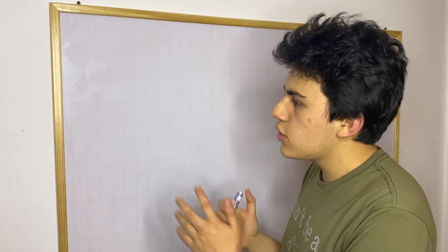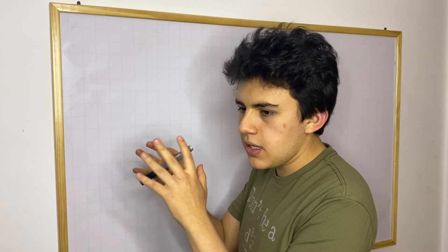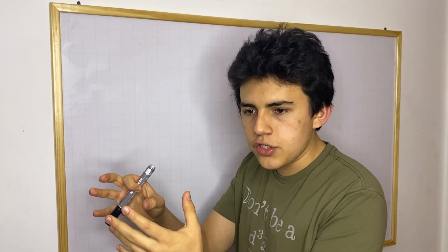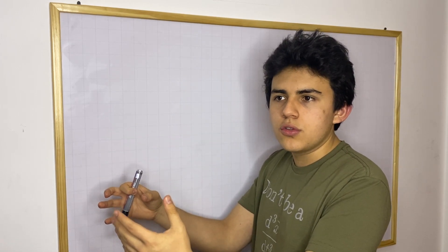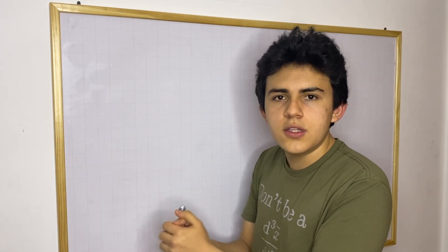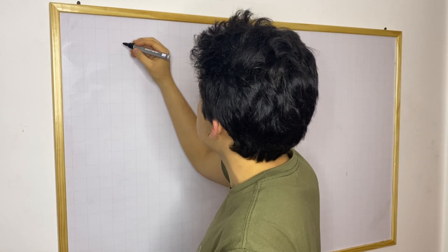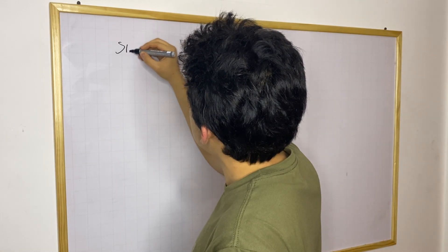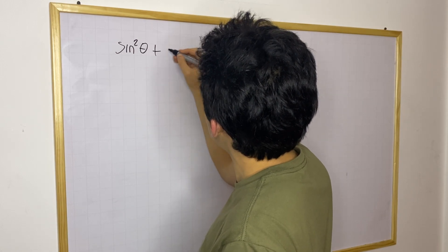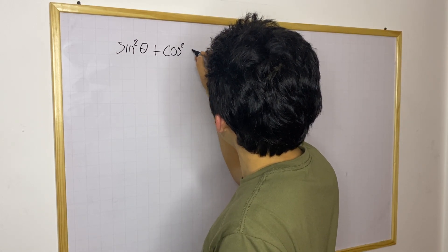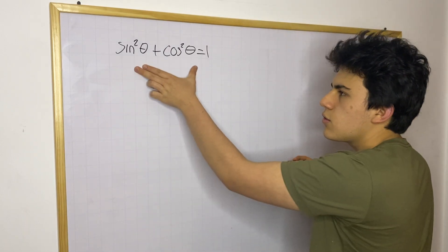We're going to derive a couple of equations today. We're going to begin from an equation — we're not going to derive it, but it will be like the first step towards deriving the other equations. So let's begin with that equation: sine squared theta plus cosine squared theta is equal to one. This is our starting equation.